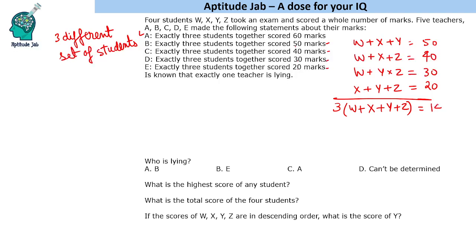So we get W+X+Y+Z equals 140 divided by 3. But it's given they scored a whole number of marks, which cannot be in fractions. So that means A is not lying.